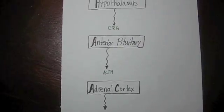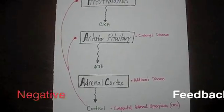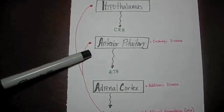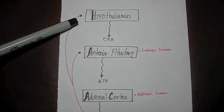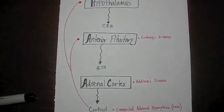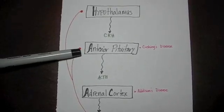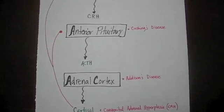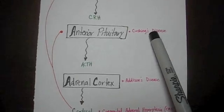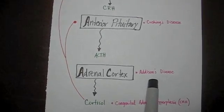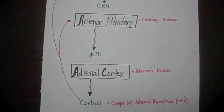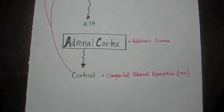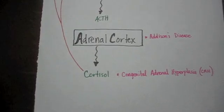We will now look at the negative feedback loop of this hormone. Cortisol has a negative feedback loop — it affects the anterior pituitary and also the hypothalamus. If there is an excess amount of cortisol in the bloodstream, this will decrease the amount of ACTH and also decrease the amount of CRH. Cushing's disease affects the anterior pituitary gland, Addison's disease affects the adrenal cortex, and congenital adrenal hyperplasia affects the production of cortisol via the deficiency of 11 or 21 alpha-hydroxylase enzyme.